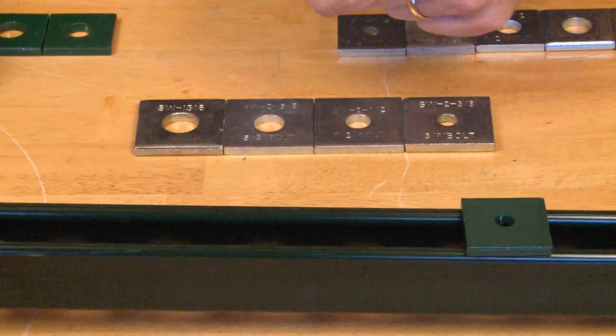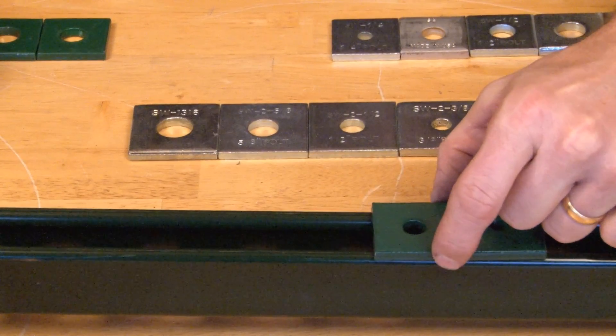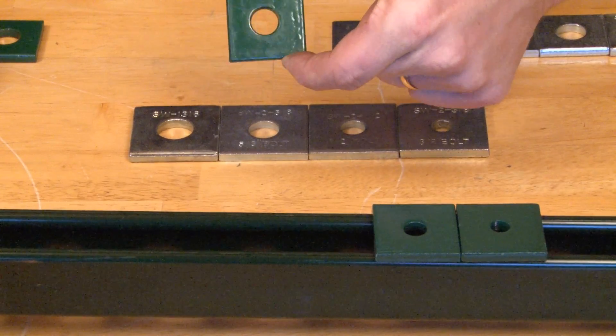The next size SW three-eighths G is for three-eighths. We also make SW half G for half inch.